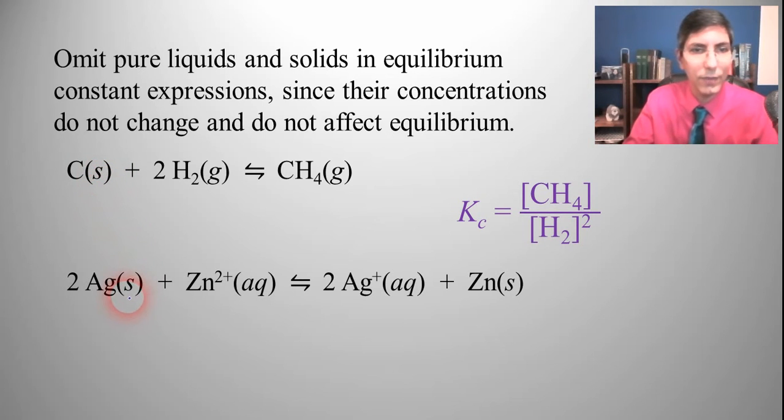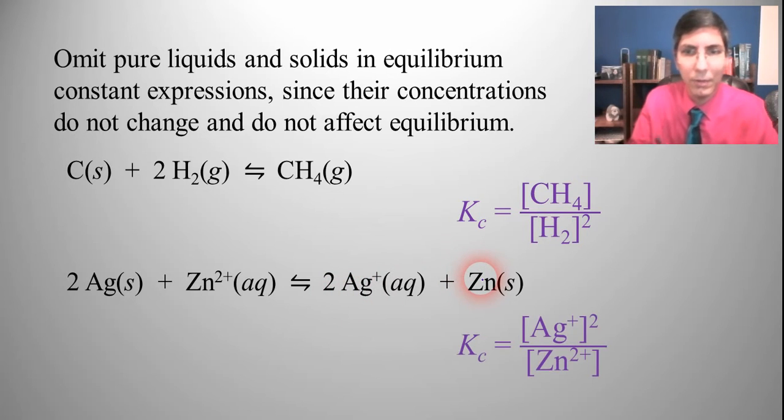How about this reaction here? We have two silvers plus a zinc two ion make a silver one ion or two silver one ions and a zinc atom. Well we leave out the solids. It's going to be Ag plus squared because there's a two right there as our coefficient all over zinc.